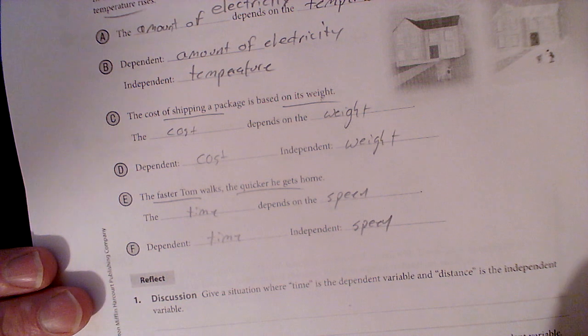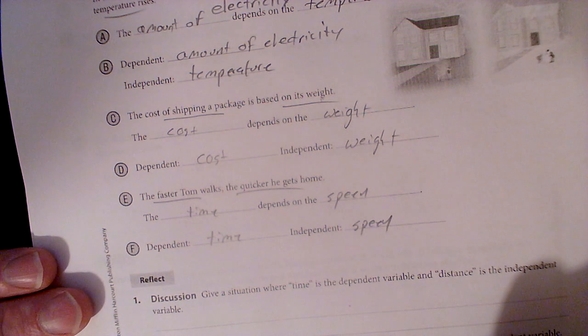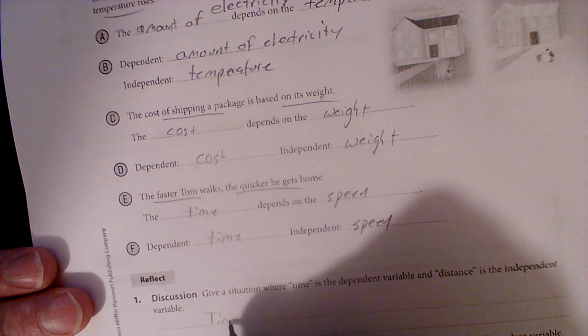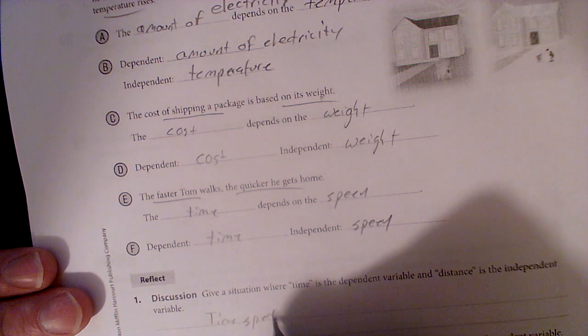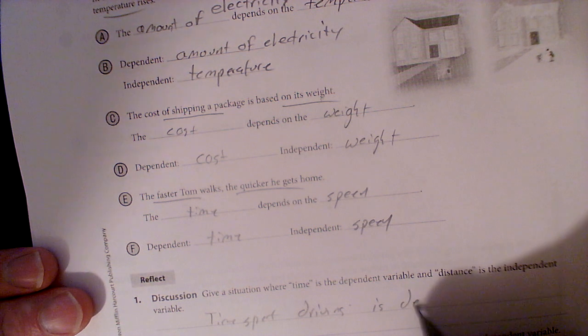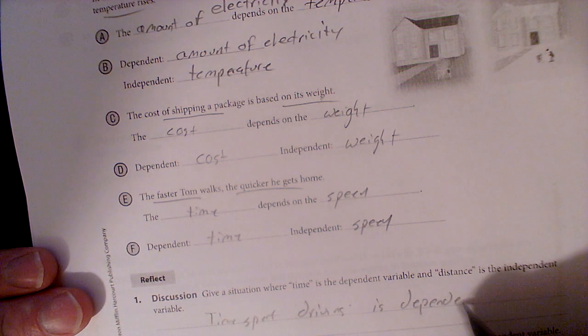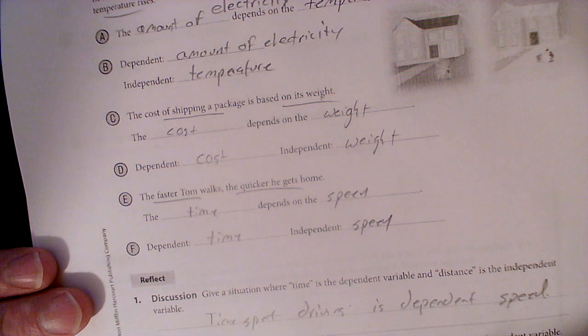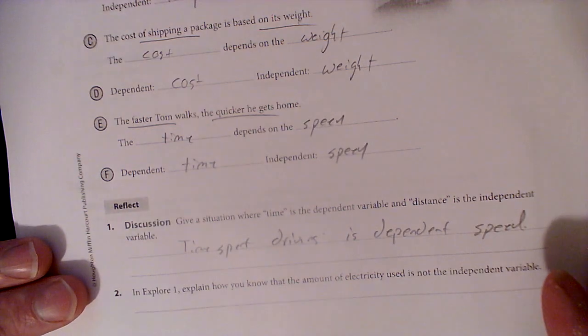Give a situation where time is dependent on something else. Well, time spent driving. How's that? Time spent driving is dependent on speed. If I drive faster, I'm going to spend less time in the car.